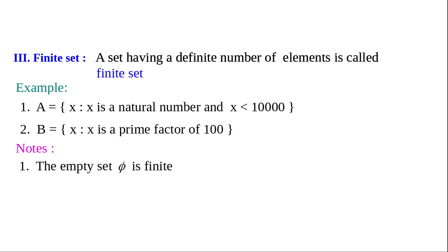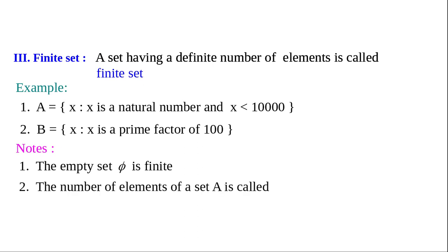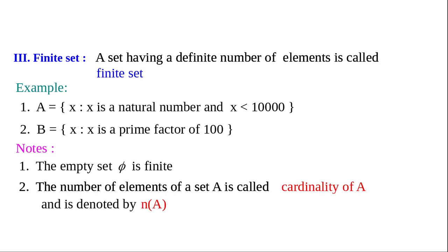Some notes: First, the empty set contains 0 elements, so we consider the empty set as a finite set — φ is finite. Second, we can count the number of elements in a finite set. The number of elements of a set A has a special name in set theory: the cardinality of A, denoted n(A). The cardinality of the empty set φ is 0.